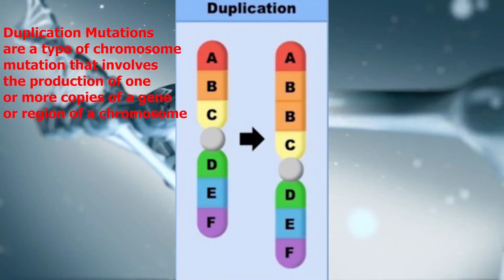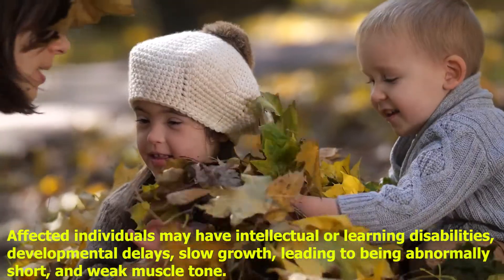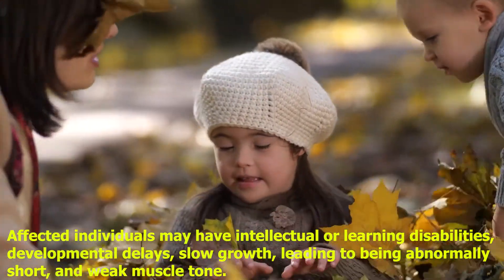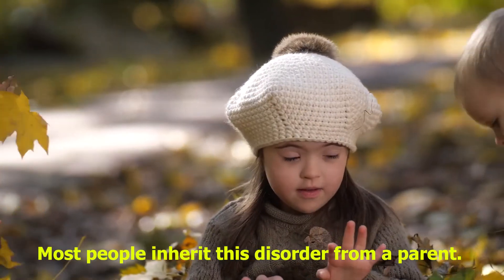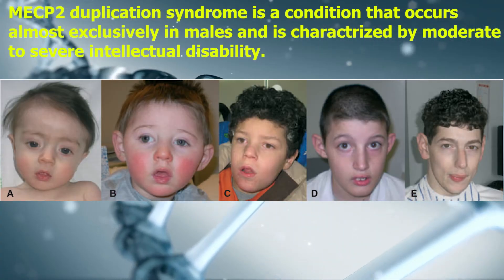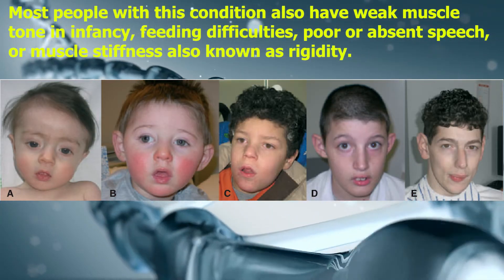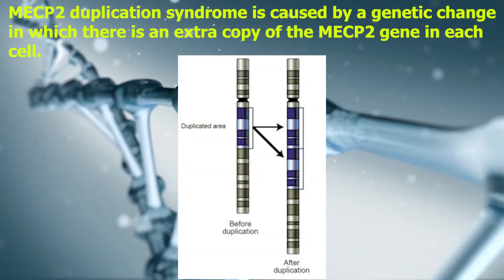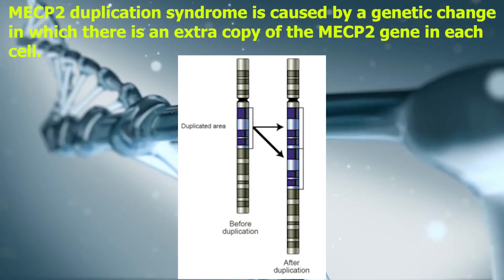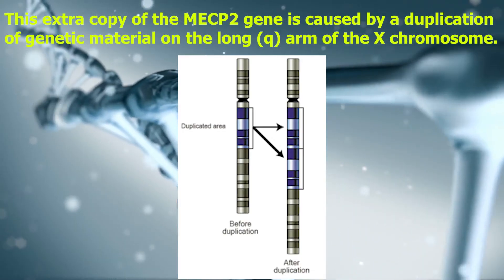Now let's take a look at duplication chromosome mutations. Duplication mutations involve the production of one or more copies of a gene or region of a chromosome. Affected individuals may have intellectual or learning disability, developmental delay, slow growth, and abnormally short stature and weak muscle tone. Most people inherit this disorder from a parent. One example is MECP2 duplication syndrome — a condition that occurs almost exclusively in males and is characterized by moderate to severe intellectual disability, weak muscle tone, feeding difficulties, poor or absent speech, and muscle stiffness, also known as rigidity. MECP2 duplication syndrome is caused by an extra copy of the MECP2 gene in each cell, resulting from a duplication of genetic material on the long Q arm of the X chromosome.